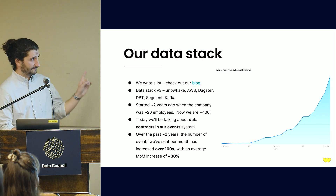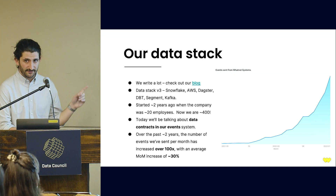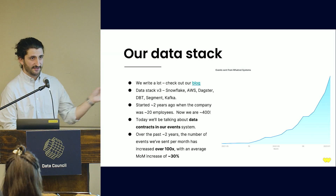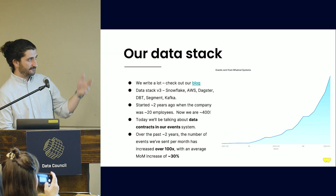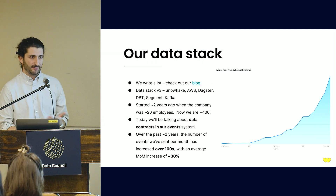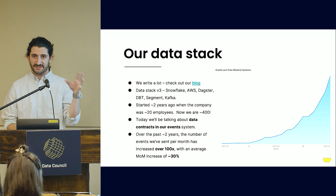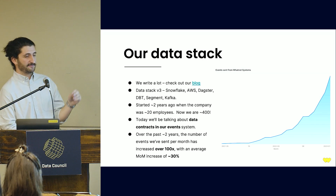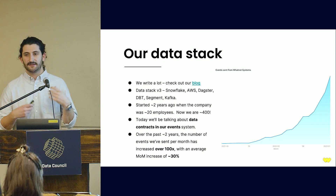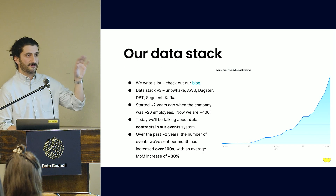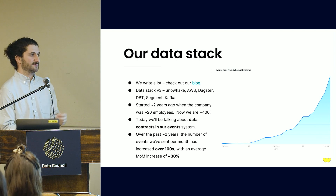Now the road so far with our data stack — quick plug for our blog, we write quite a lot about all this stuff. The tools in our data stack are the usual suspects: we use Snowflake for our data warehouse, mostly an AWS shop. We use Dagster for orchestration, DBT for transformations in the warehouse. Segment and Kafka are the two I'm going to be talking about specifically today — that's how we do events and analytics events.